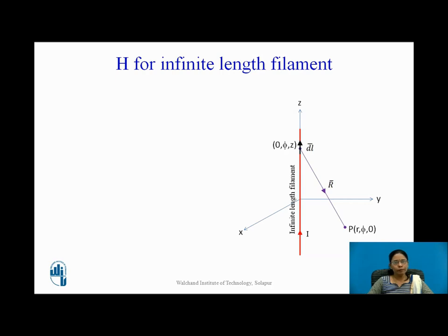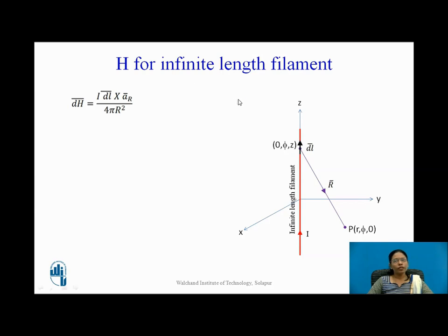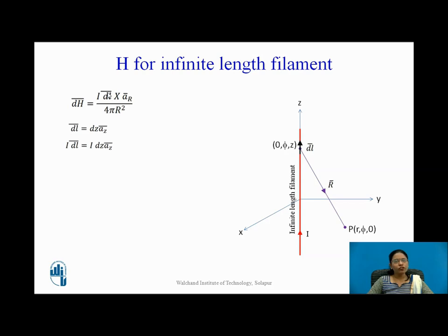Now let us start deriving the equation for H bar. DH bar is equal to I DL bar cross AR bar upon 4 pi R square — the same Biot-Savart's law, but written for a differential length, so the integral sign is omitted and it is written as DH bar. The unknowns to find are DL bar, AR bar, and R.